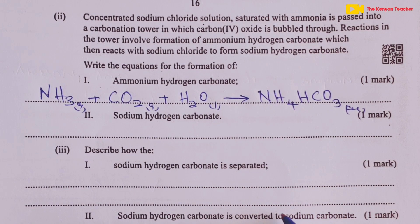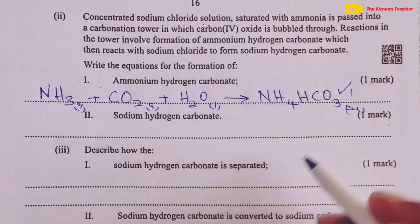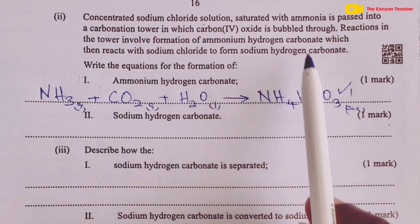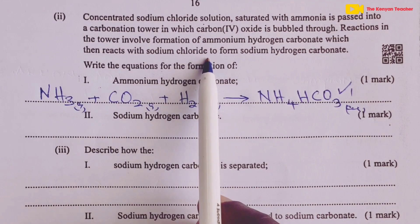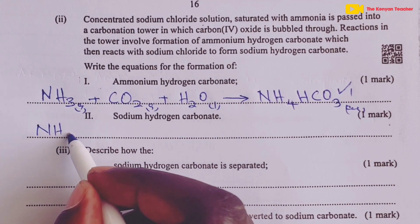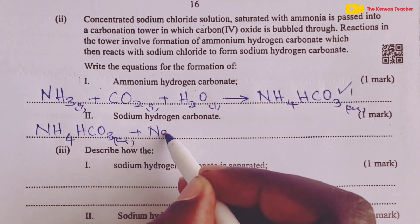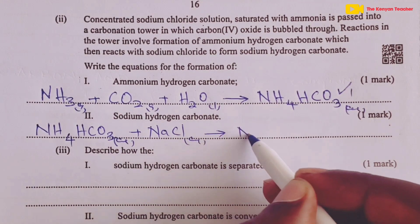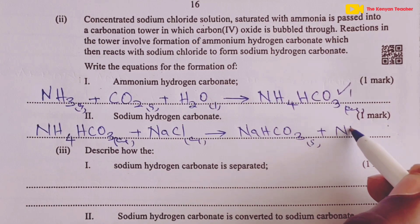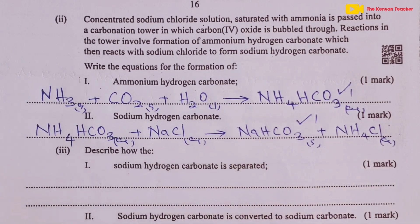The beauty of this equation is that it balances itself. Take note of the state symbols as well: gas, gas, liquid, and aqueous — for the next mark. For formation of sodium hydrogen carbonate, the ammonium hydrogen carbonate in aqueous state reacts with sodium chloride in aqueous state to form sodium hydrogen carbonate as a solid — since its solubility in the mixture is low — and ammonium chloride, which is highly soluble, as aqueous.